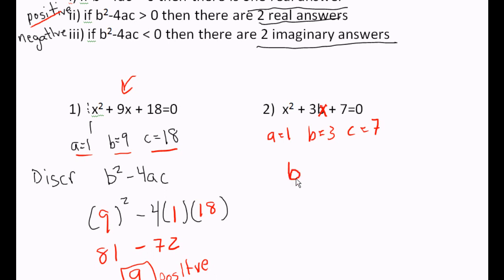The formula is for the discriminant, b squared minus 4 times a times c. b squared minus 4 times a times c.